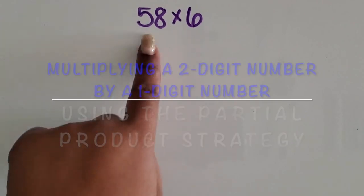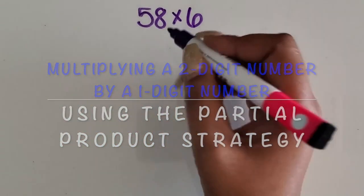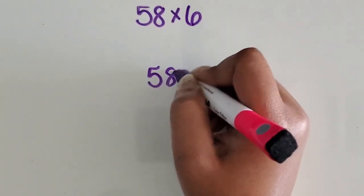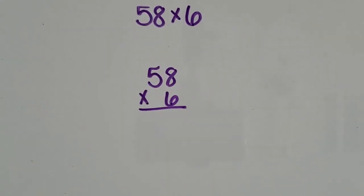We're going to multiply a two-digit number by a one-digit number using the partial product strategy. We're going to line the numbers up vertically, similar to the standard or traditional algorithm.